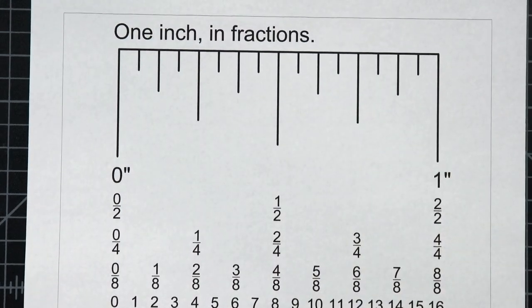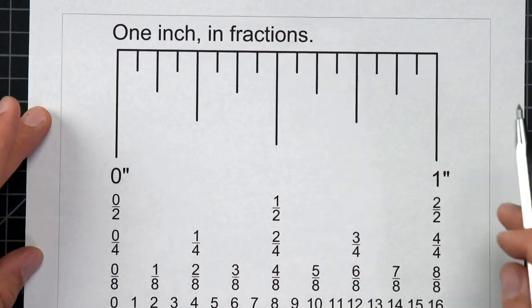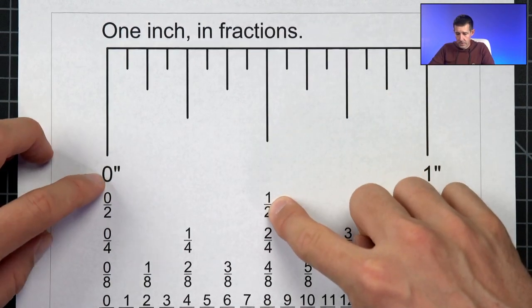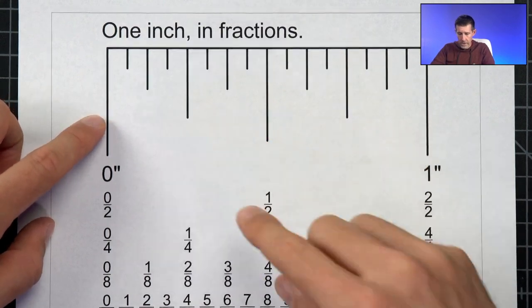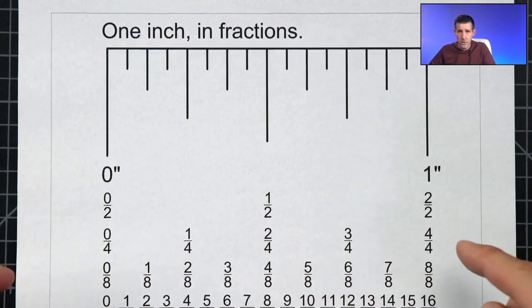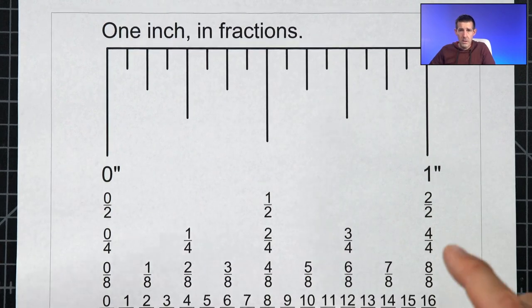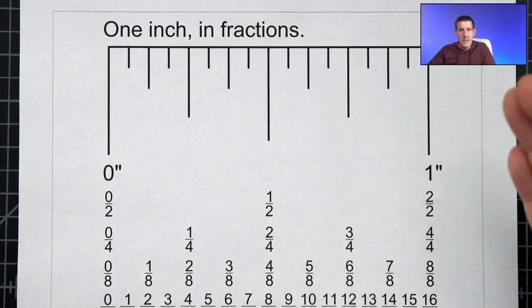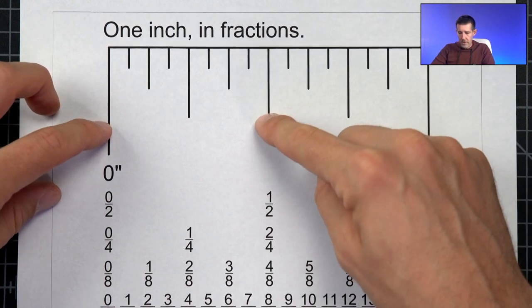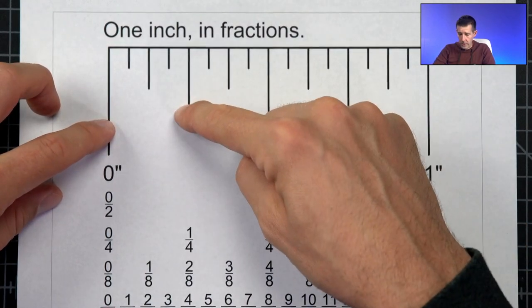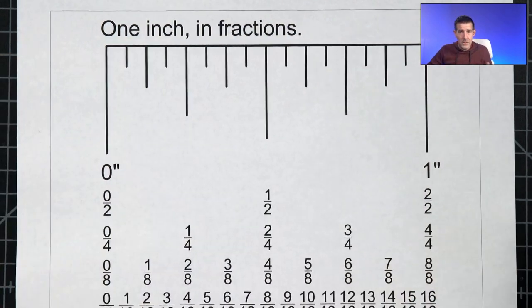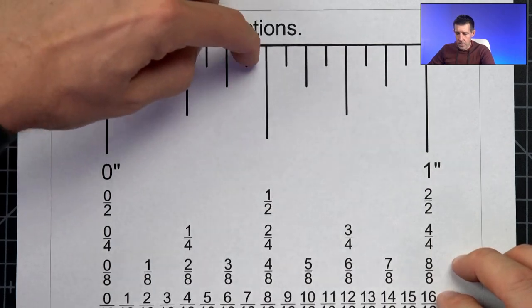We're going to be working with precision here. I'm going to ask you to do things in quarters of an inch, eighths of an inch, and sixteenths of an inch. I want to define that really clearly. If this is zero inch and this is one inch, one inch long here, half of that is going to be a half inch. Then half of that is going to be a quarter inch. I made this for you so you can download this. In between zero and one, we have a half. In between zero and half, we have a quarter inch. In between zero and a quarter, we have an eighth of an inch. In between zero and an eighth, we have a sixteenth of an inch.